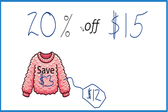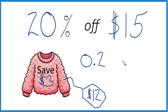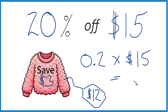And here's how you do it: 20% — percent means per 100, or over 100 — so it's 20 over 100. If you divide 20 over 100 in a calculator or in your head, you get 0.2. And instead of 'off,' we're going to call that multiplication, so we multiply it by $15. And 0.2 times $15 equals $3.